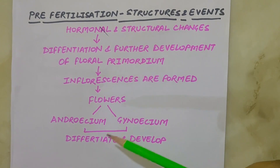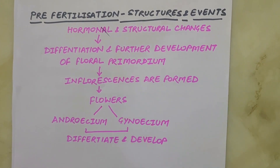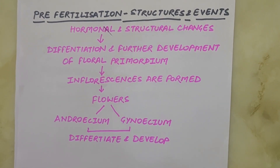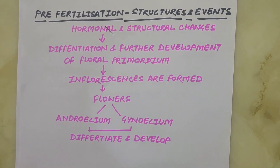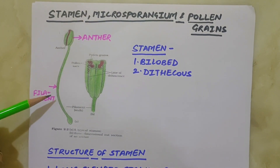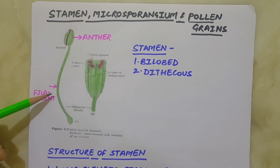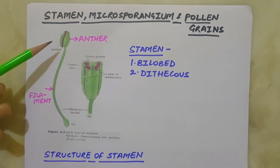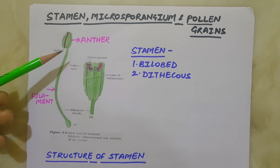As we are talking about androecium, let's have a look at the structure of the stamen first. There is a long slender stalk called the filament, and the bilobed structure called the anther.